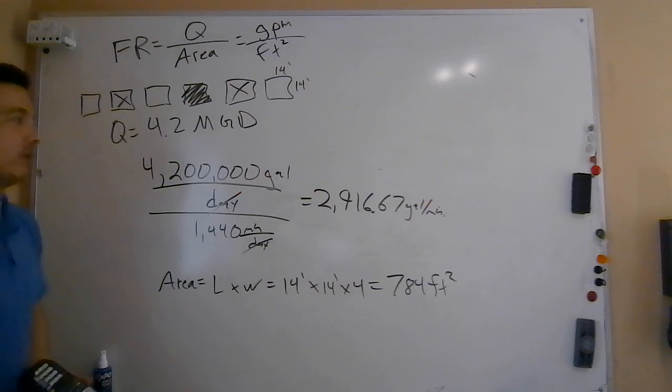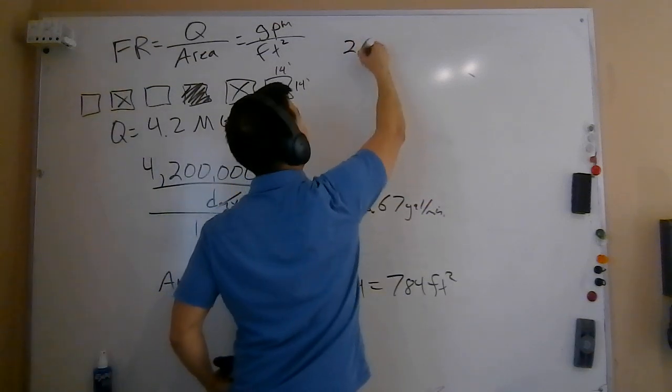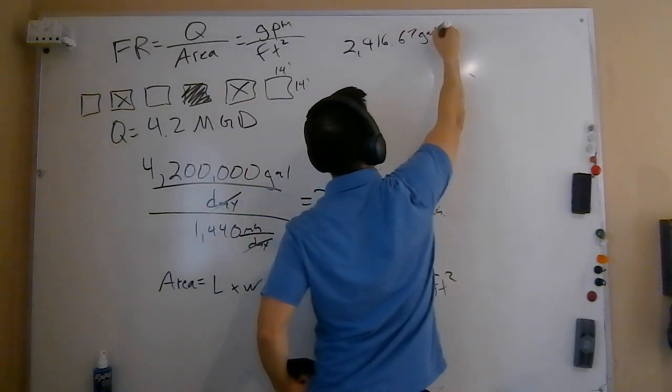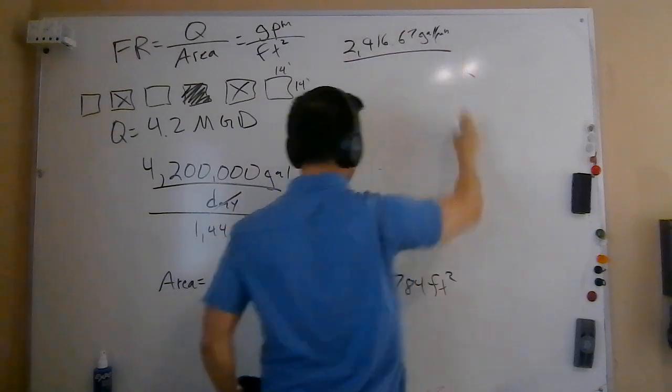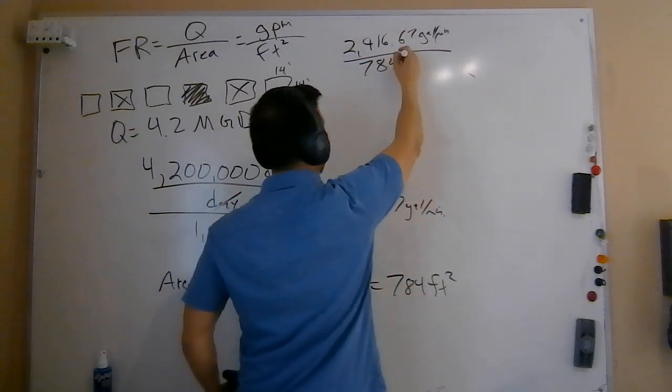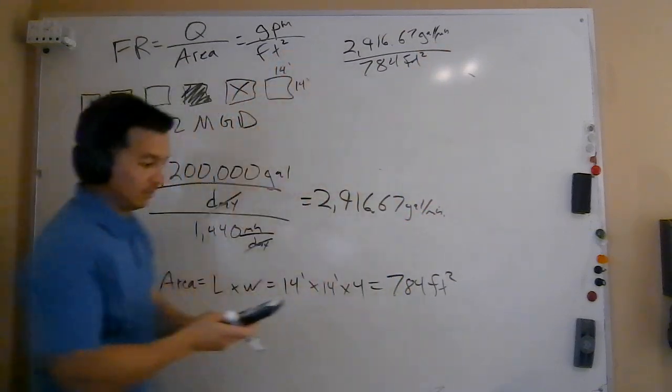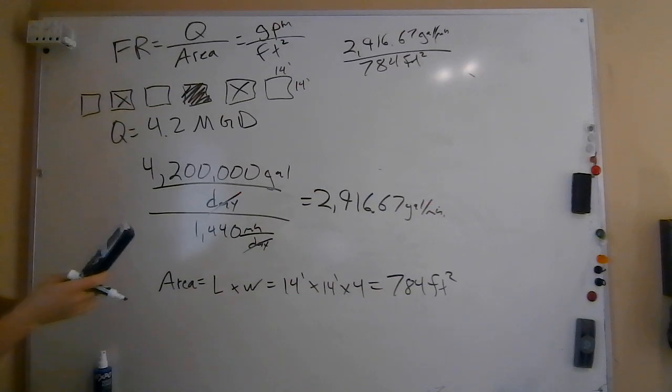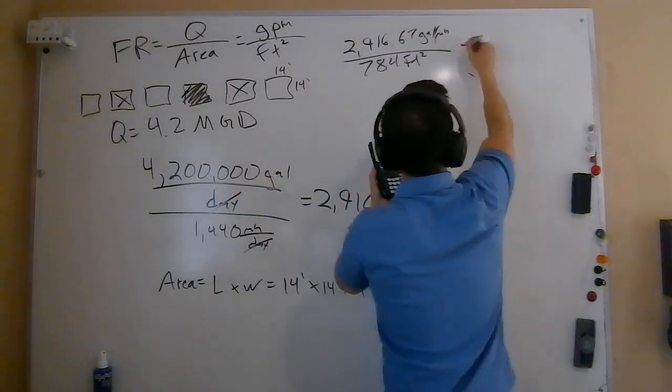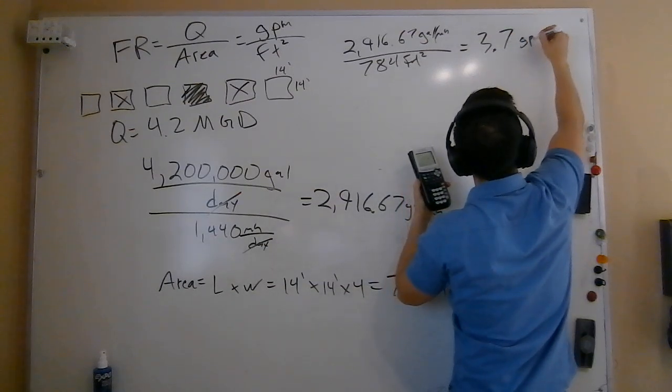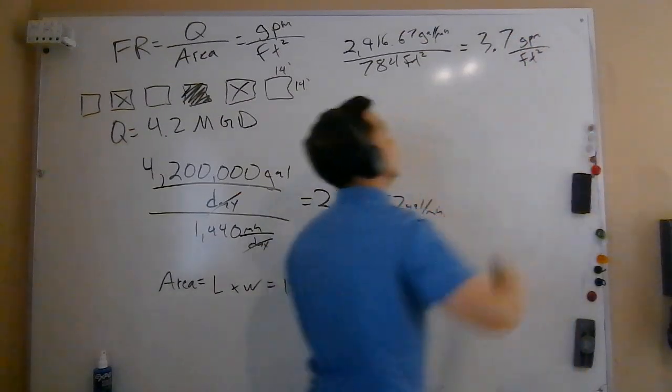So now that I've got my area, I've got my flow. Now I'm going to plug it into my filtration rate formula. If I rewrite it over here, 2,916.67, this is going to be in gallons per minute. I'm going to divide that by my area, 784 square feet, the total area that's treating this total amount of flow. So let's see what we get here. 2,916.67 divided by 784. And I get a filtration rate equal to 3.7 gallons per minute per square foot of area.